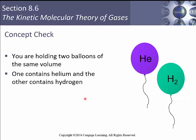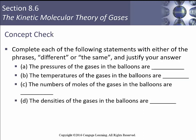Let's do a concept check. You've got two balloons with the same volume — one contains helium and one contains hydrogen. We're going to write either 'different' or 'same' and justify our answer. The pressures of the gases inside the balloon are going to be the same, because they're both in the same room. The temperatures of the gases in both balloons will be the same — they're being held at the same temperature. The number of moles of gas in the balloon, keeping in mind that they've got the same volume, is going to be the same.